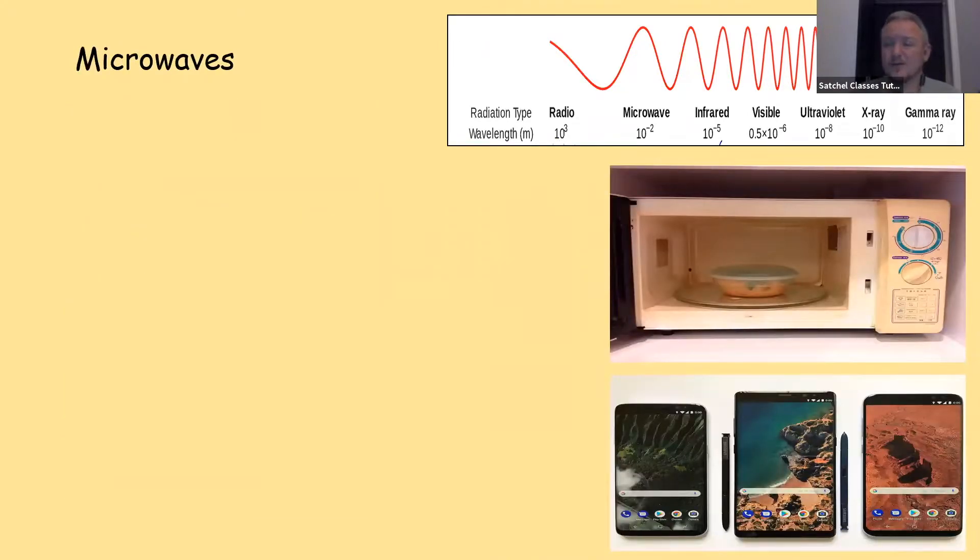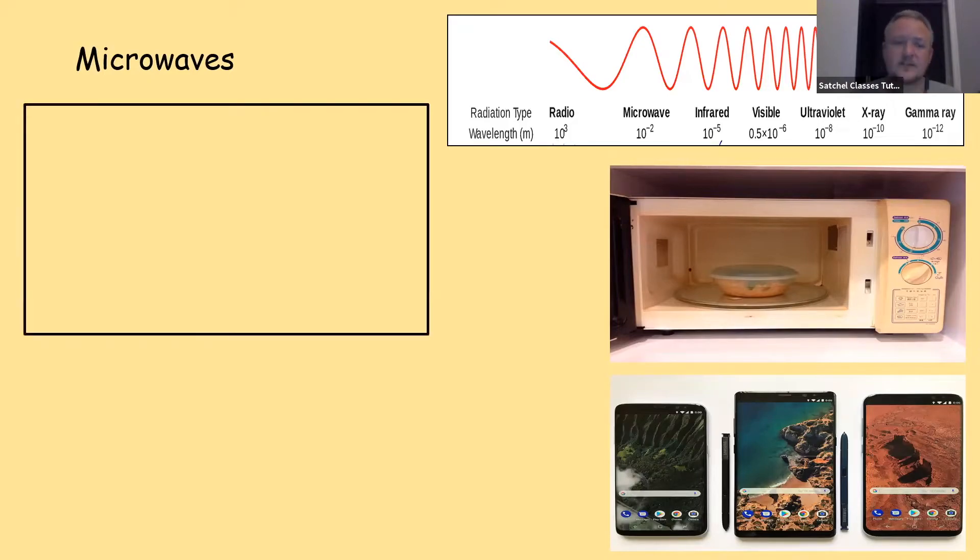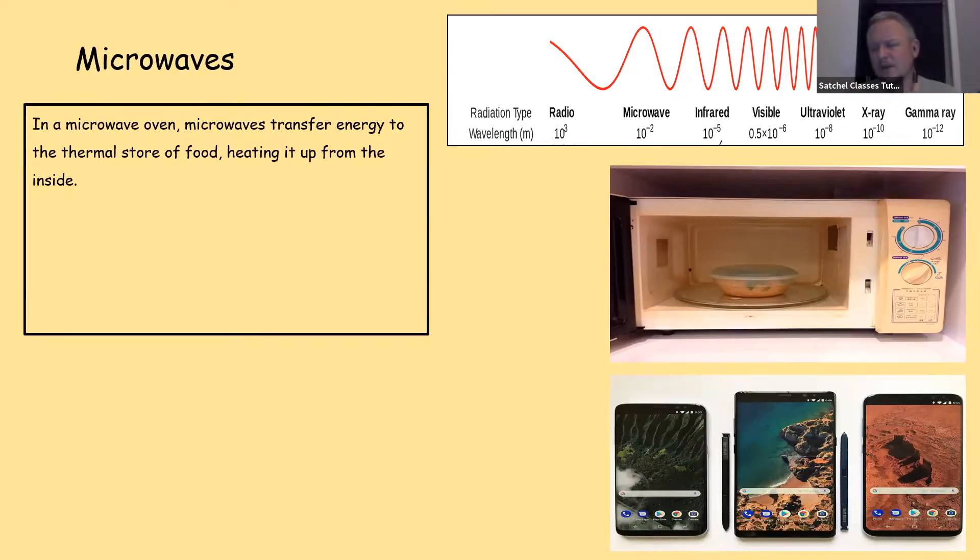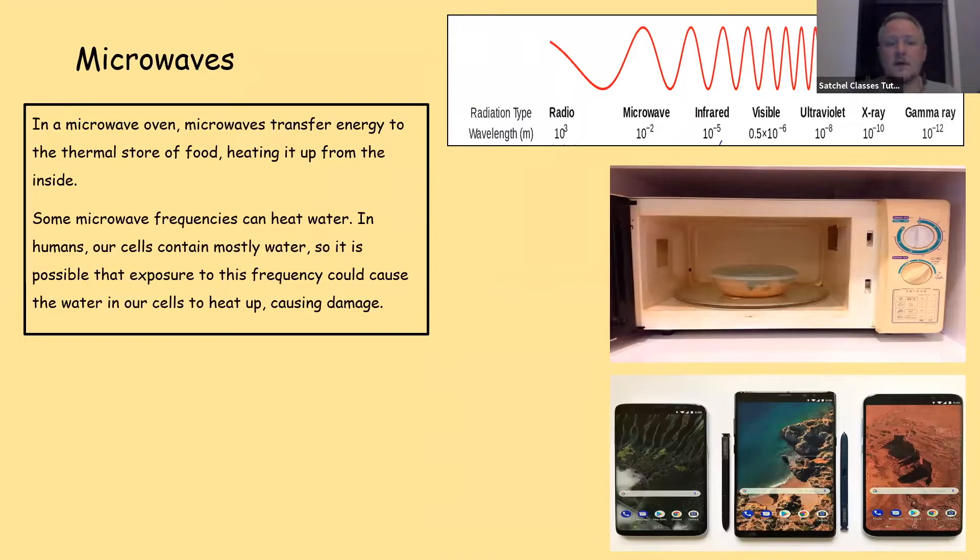Microwaves. Microwave ovens transfer energy to the thermal store of food, heating it up from the inside. What that means is that microwaves can actually penetrate into the food and cook it from the outside in by adding heat energy to oils and water within the food, making it heat up from the inside. Some microwave frequencies can heat water. In humans, our cells mostly contain water. So it was thought in the past that mobile phones which use microwave frequencies could cause water in cells near to your ears and your brain to heat up causing damage and possibly brain tumours. It's something that's been debunked by years of research now.